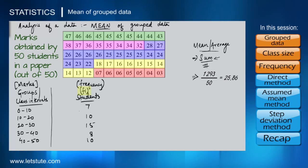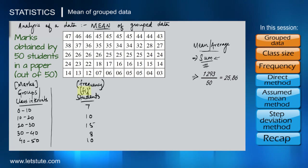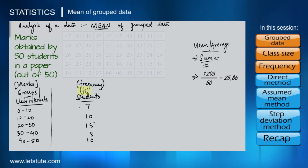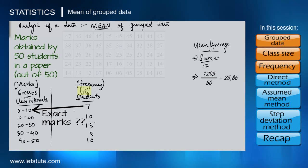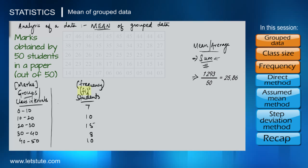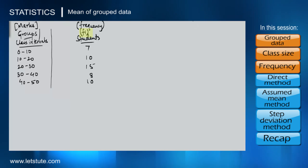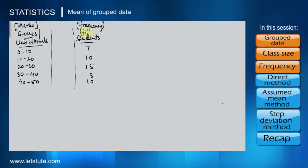Here fi stands for the number of observations, so we have f1, f2, f3, and so on. However, there is one disadvantage when working with grouped data: I can only know the range of marks secured by students — for example, 7 students scored 0–10 marks, but I don't know the exact marks for each of them. Some information is lost. So when we are given only this grouped data without the raw data, how do we find the mean? We can only estimate it, since the exact values are unknown.